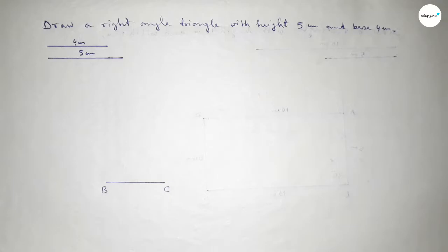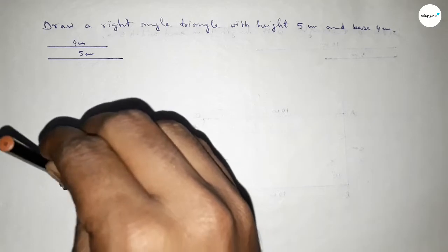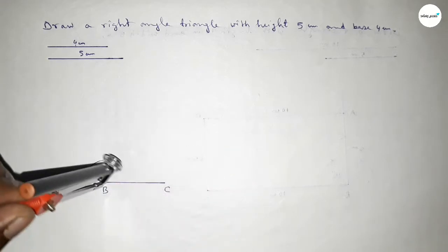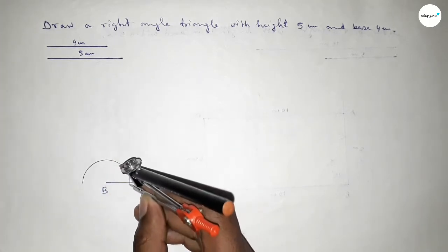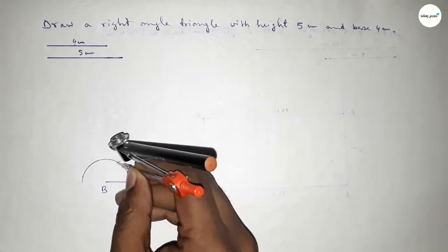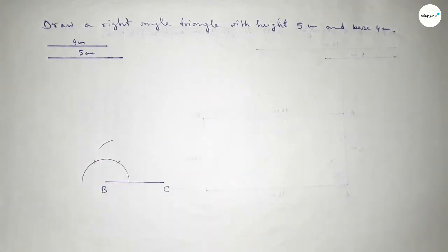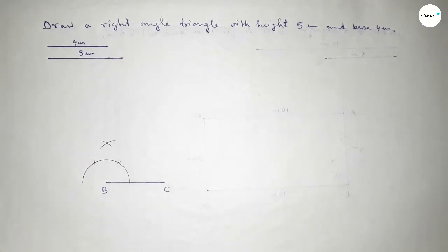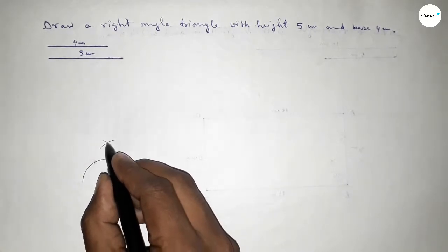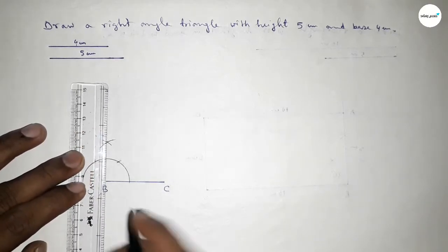Now we have to draw a 90 degree angle at point B. Putting the compass on point B and drawing an arc, then placing the compass here and cutting arcs at multiple positions. Both curves intersect at a point, so joining this side to get a 90 degree angle.